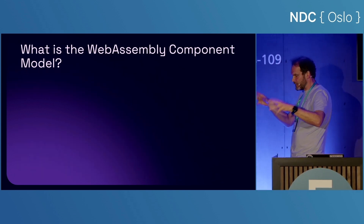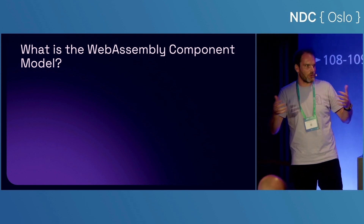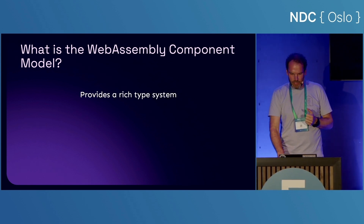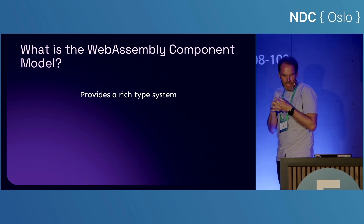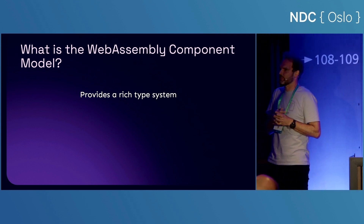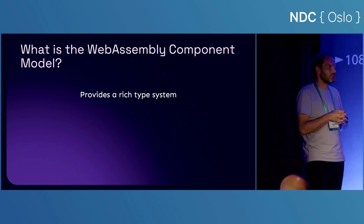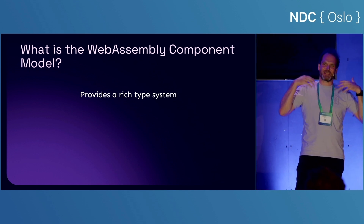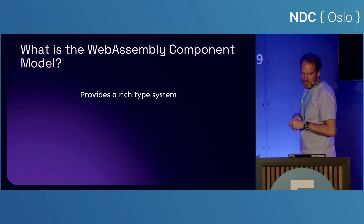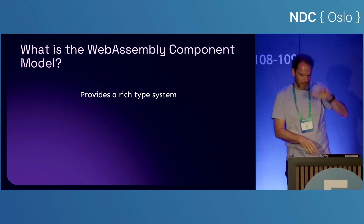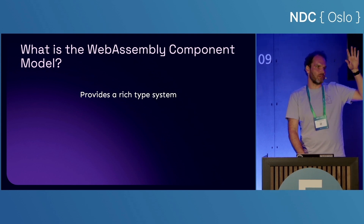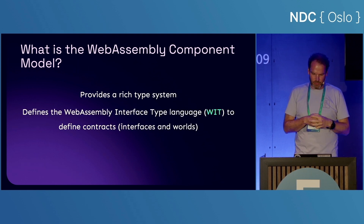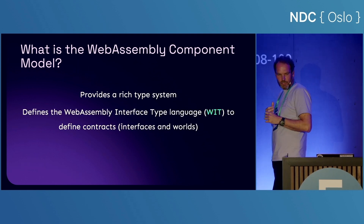So now we have WebAssembly components that we can get from different programming languages in a common format, runnable across anything using these runtimes. What is the component model then? Really, what it mainly does is provide a much richer type system than what WebAssembly as a specification has. WebAssembly only has four types, and while you can technically do anything with four types, the abstractions become extremely awkward. The WebAssembly component model provides that rich type system on top.